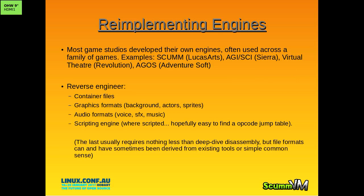Re-implementing an engine is how the project started. A lot of these studios developed their own engines: LucasArts had SCUM, Sierra had AGI and SCI, Revolution Software had Virtual Theater, Adventure Soft had AGOS for Simon the Sorcerer. This is great for a project like this because it means we implement an engine and we support not just a game but a family of games - you get this snowball effect.